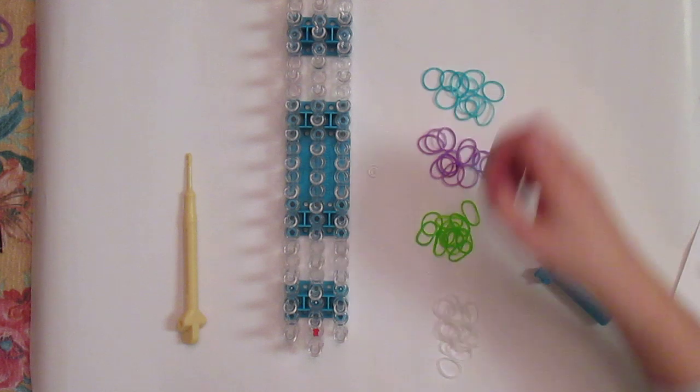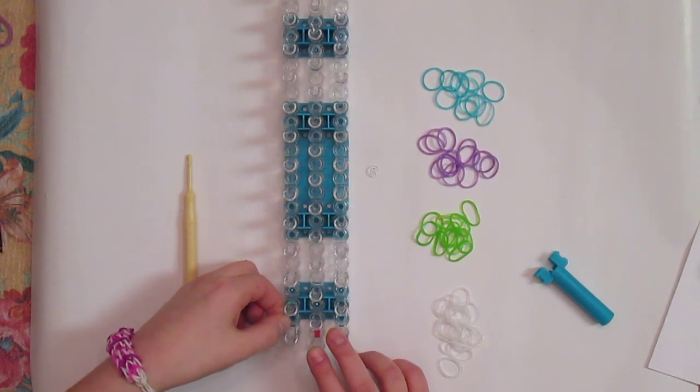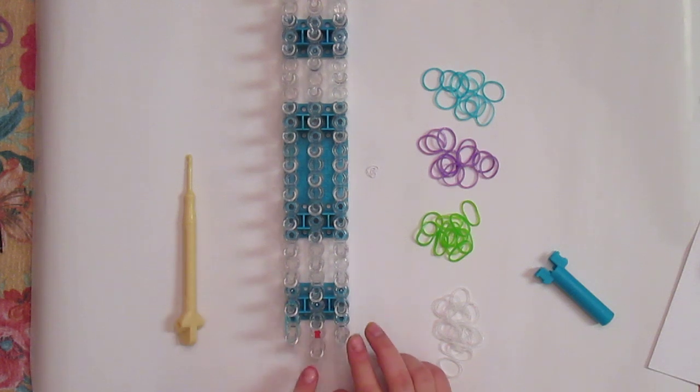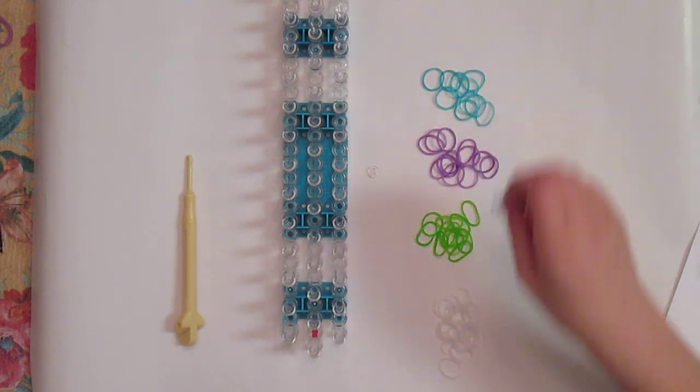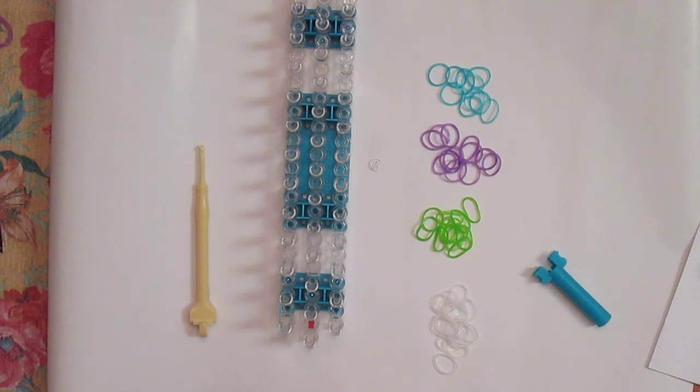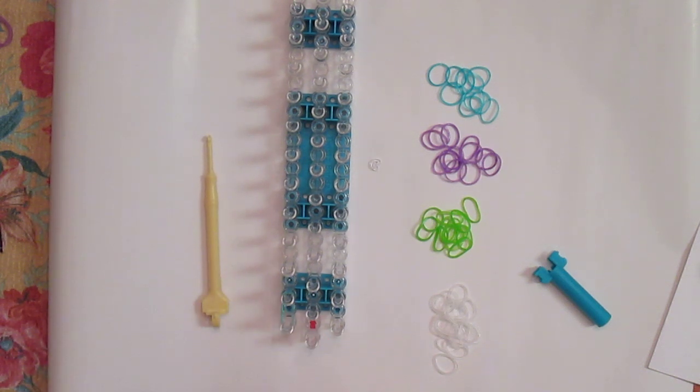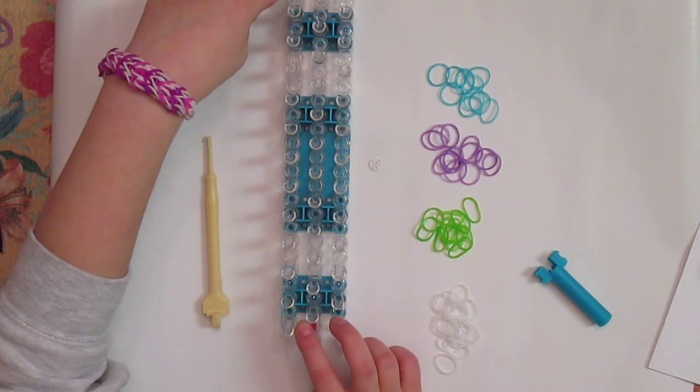Let's get started. First take your teal and go forward one peg. Make sure your loom is in a V-shape. If it isn't you might need some help fixing it with your utensil on the back of your hook. So I've went one space. With your 12 teal go all the way down till you reach this pin.